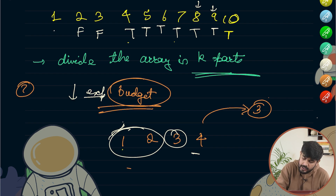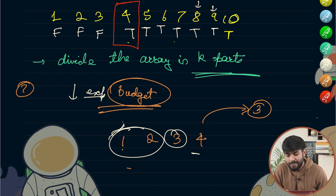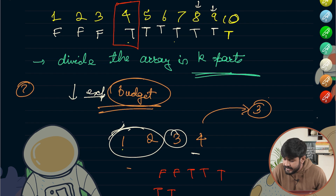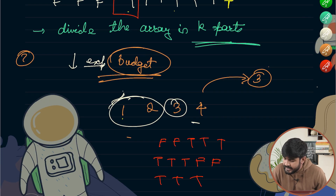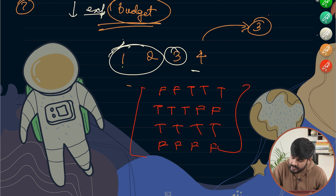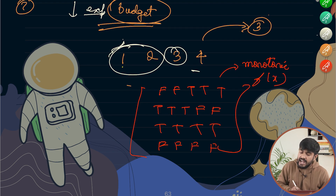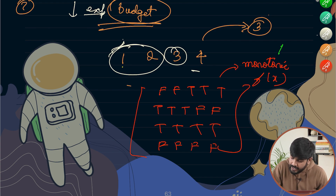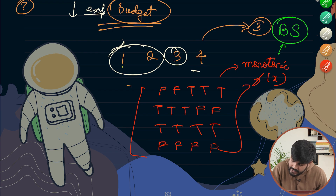So whenever we have something like F, F, F, T, T, T, T - or T, T, T, F, F, or only T's or only F's - this is what's known as a monotonic function. And if you see a monotonic function, you need to learn by heart that this problem is of binary search.